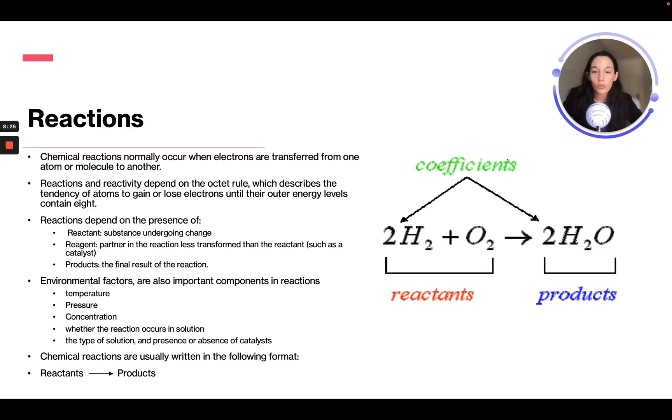Chemical reactions are usually written in the following format: reactants to products. So again, these are our reactants, these are our coefficients, the big numbers before, and then these are our products.